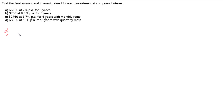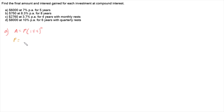Our compound interest formula is A equals P times 1 plus i to the power of N. P is our principal — it's how much money we're starting with, which is $6,000 in this case.